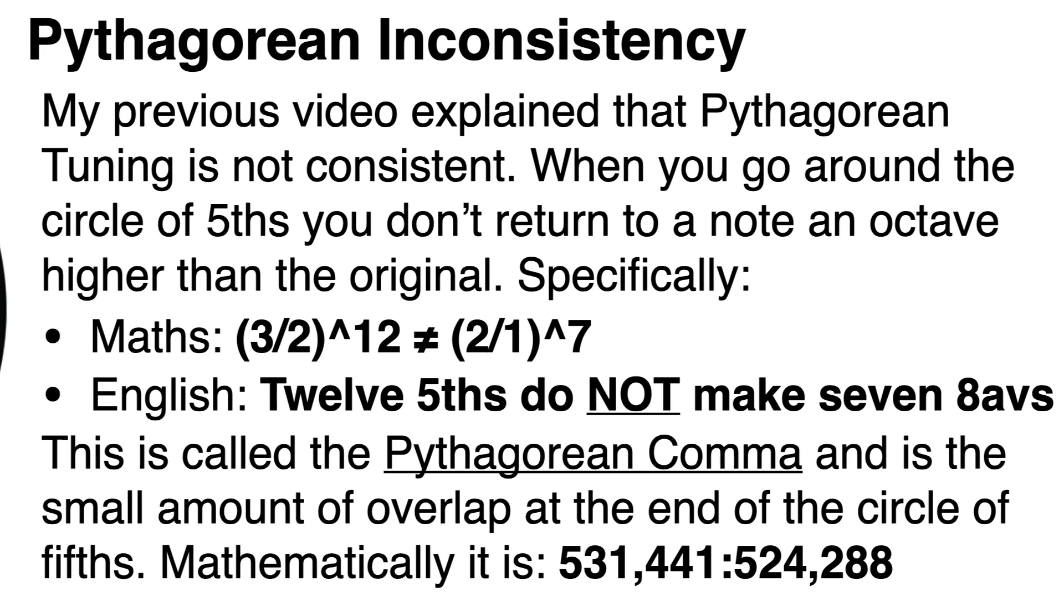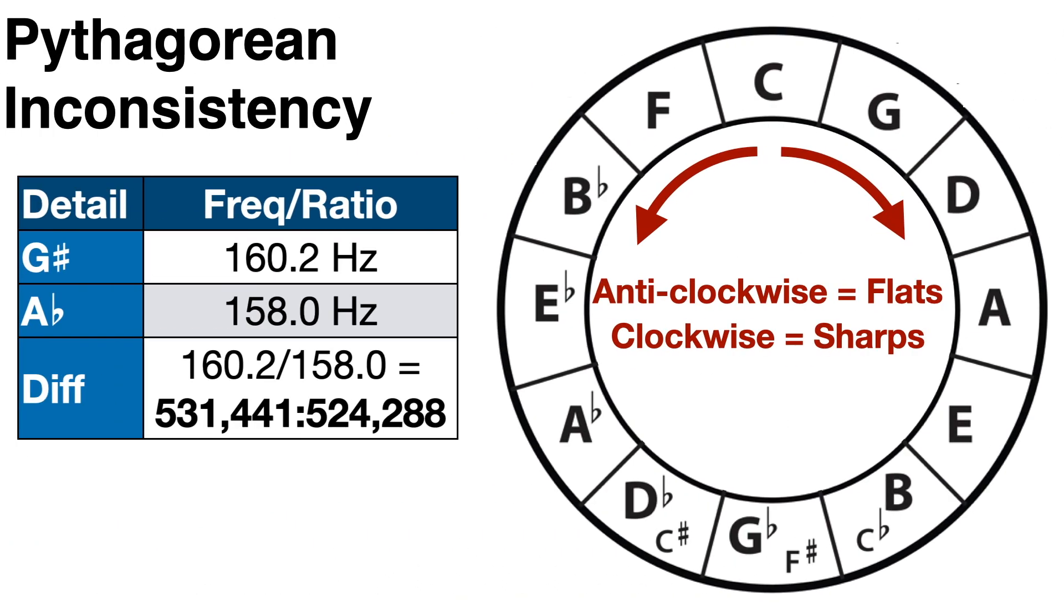Well, if we take the difference between the notes G sharp and A flat, we of course again find that it varies by the Pythagorean comma. And this is precisely because it is effectively like going all the way around the circle of fifths. Going clockwise, we find the sharp variant of the note and anti-clockwise, we find the flat variant of the note. So we've effectively done the full circle of fifths from both sides.